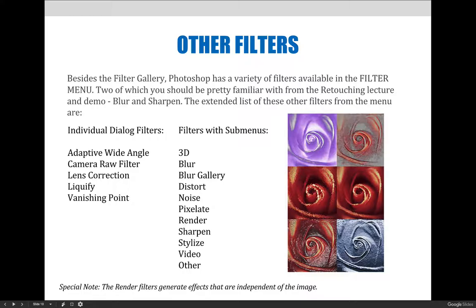For instance, you're familiar with the Blur filters. If you go to Blur in the Filter menu, you'll see it has quite a few options like Average, Blur, Blur More, Box Blur, and a lot more than just that. So those would be the Blur submenus.